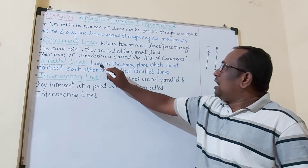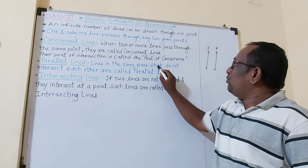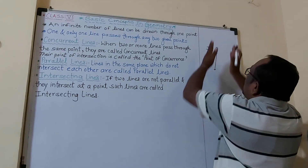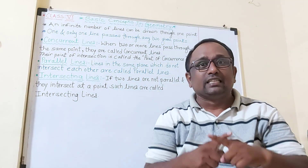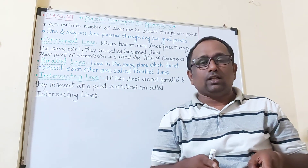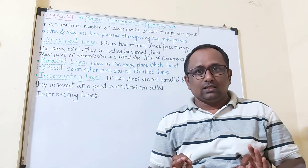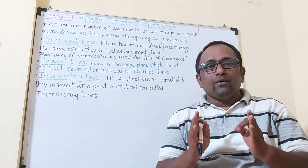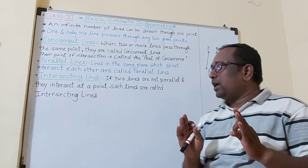Lines in the same plane which do not intersect: these lines go in the upward direction and downward direction, but they never intersect, they never meet each other. So these lines are called parallel lines — lines that never intersect are called parallel lines.